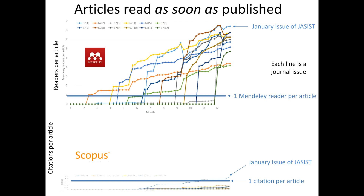On the other hand, in Scopus, with one exception, every issue has less than one citation per article even at the end of the year. Overall, Mendeley readers appear about a year before Scopus citations — a one-year speed advantage. So maybe you can evaluate the impact of journal articles after four years instead of five, using Mendeley readers rather than Scopus citations. For some purposes, you could assess academic impact through Mendeley readers even more quickly, in the same year.